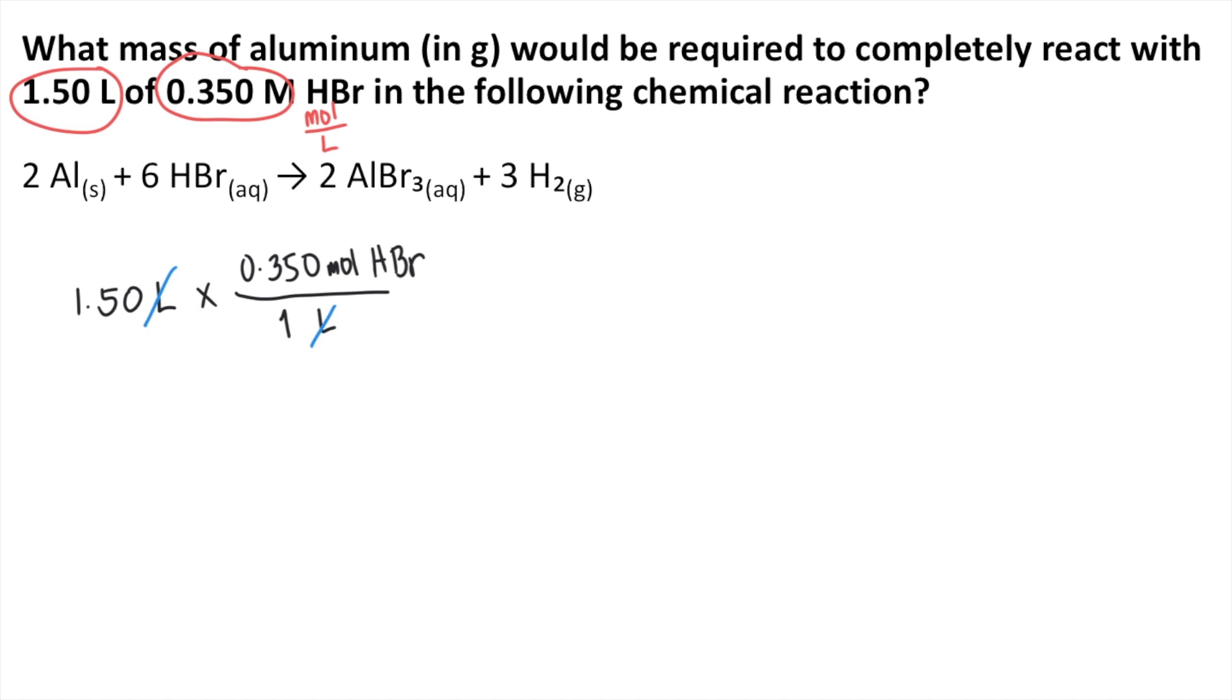And then, using the balanced equation, we will get the moles of aluminum. Because the problem is asking for aluminum, right? So we will just look at the balanced equation. And as you can see, it says here that for every 6 moles of HBr, it reacts with 2 moles of aluminum. So that is their mole ratio.